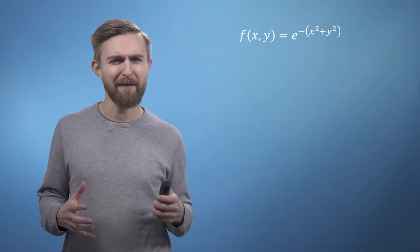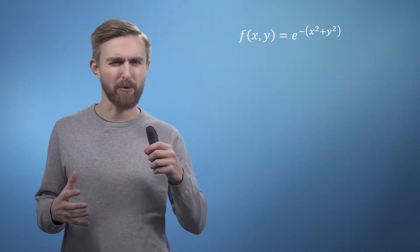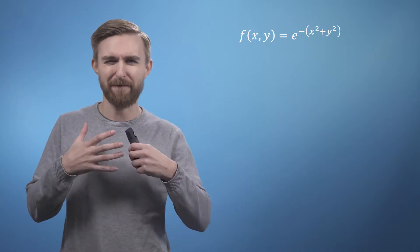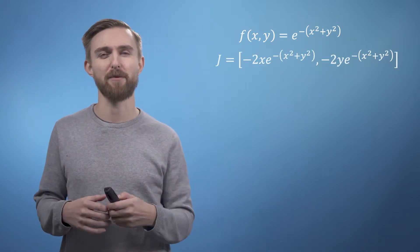However before we do this we are first going to recap by applying what we've learned so far about Jacobians to another simple system. If we consider the function f(x,y) equals e to the power of minus (x squared plus y squared) then using our knowledge of partial differentiation it's fairly straightforward to find its Jacobian vector.